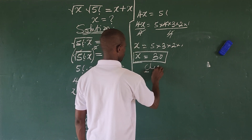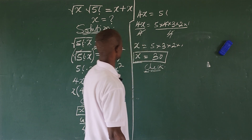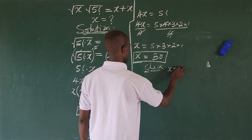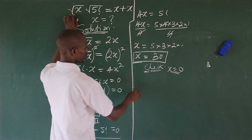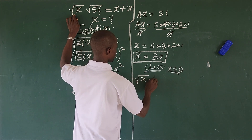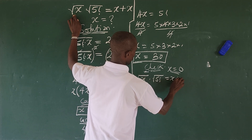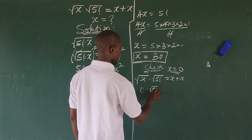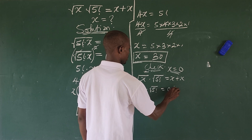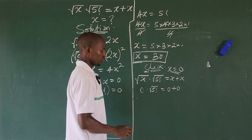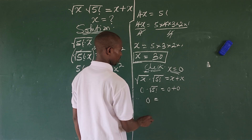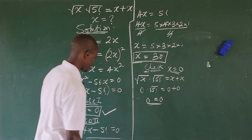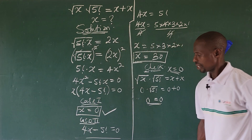Let's verify both roots. For x equals zero: substituting into the original equation gives the square root of zero times the square root of 5 factorial equals zero plus zero, which simplifies to zero equals zero. The first root satisfies the original equation.